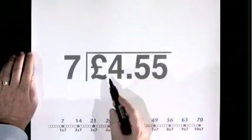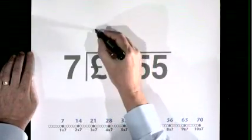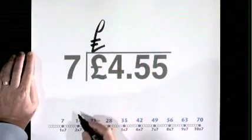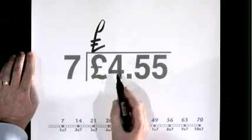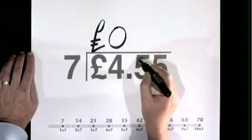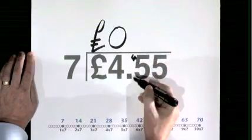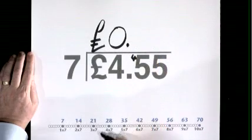£4.55 divided by 7. 7 does not go into 4, no times, remainder 4. Decimal.